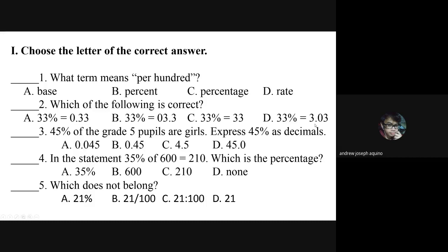Number three: 45 percent of the Grade 5 pupils are girls. Express 45 percent as a decimal. Letter A: 0.045. Letter B: 0.45. Letter C: 4.5. Letter D: 45.0. Number four: in the statement '35 percent of 600 equals 210,' which is the percentage?